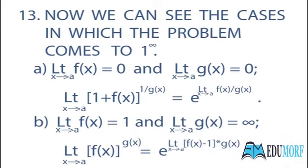Thirteenth (b): If limit x tends to a of f(x) equals 0 and limit x tends to a of g(x) equals infinity, then limit x tends to a of f(x) raised to the power g(x) equals e raised to the power limit x tends to a of (f(x) − 1) into g(x).